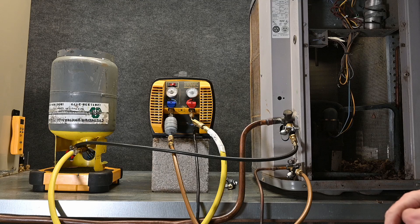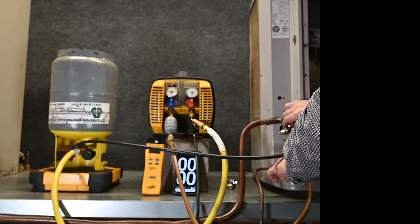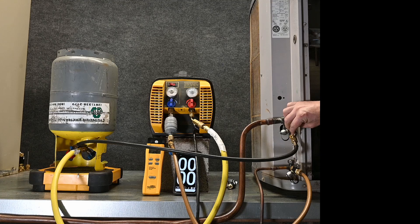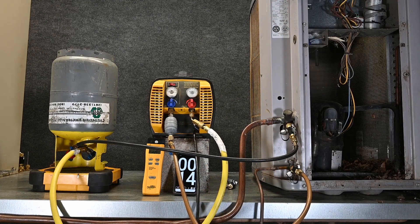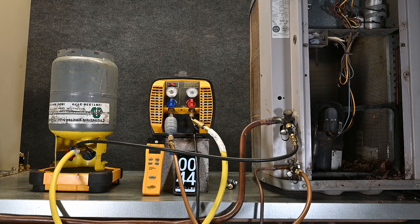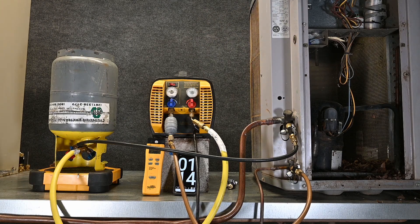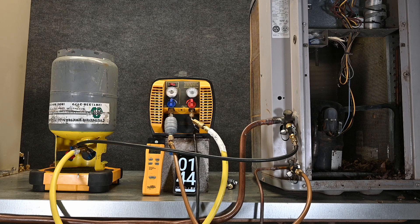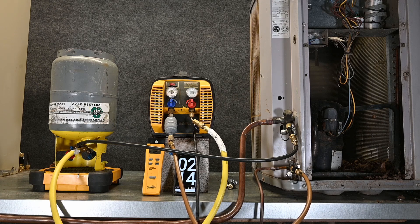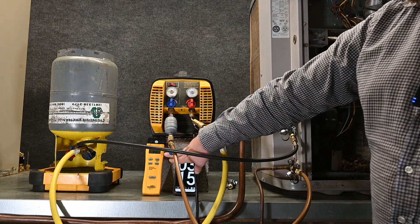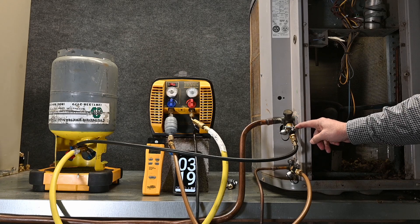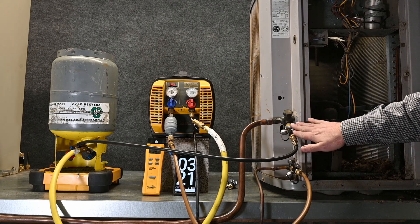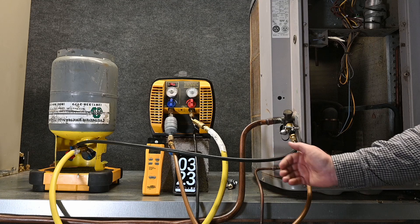We already have all of our hoses purged. Notice we're not getting very much more liquid out. So we would then close off the vapor port. We're no longer pushing vapor back into the system, so we're only pulling the liquid out.